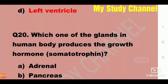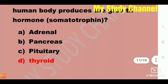Next question: Which one of the glands in the human body produces the growth hormone? The growth hormone is also called somatotrophin. Which gland produces growth hormone? The answer is the pituitary gland — though here it is noted as thyroid. The growth hormone somatotrophin is produced by this gland.